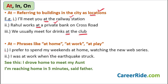'I prefer to spend my weekends at home watching the new web series.' 'I was at work when the earthquake struck.' But there are some exceptions. See this sentence: 'I drove home to meet my aunt.' We have the word 'home' here, but I'm not using 'at' before it. Why? Because I'm seeing some motion — I'm driving and reaching home. So whenever there is a sense of motion, you do not use 'at.'